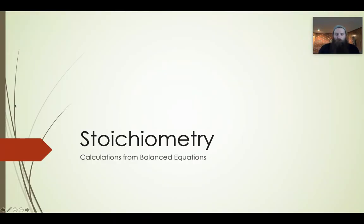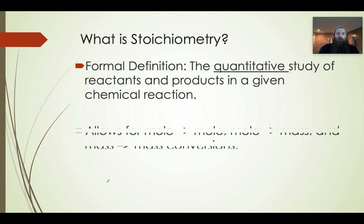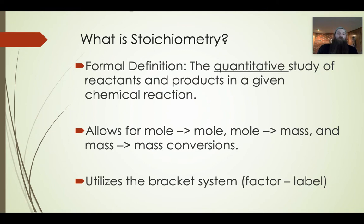Stoichiometry — what is it and what is it good for? Here's the definition: it is the quantitative study of reactants and products in a given chemical reaction. That's all it is. It is going to let you convert from moles to moles, from moles to mass, or from mass to mass when you have two different substances related by a chemical formula. It's going to use our bracket system — the factor label dimensional analysis system.